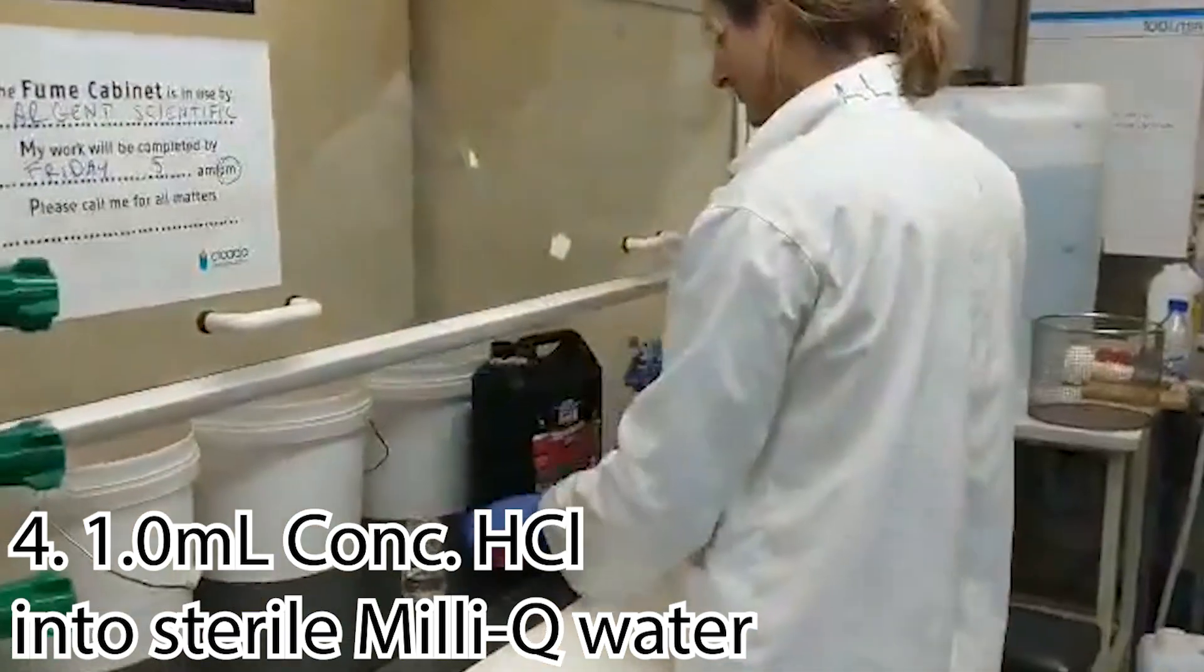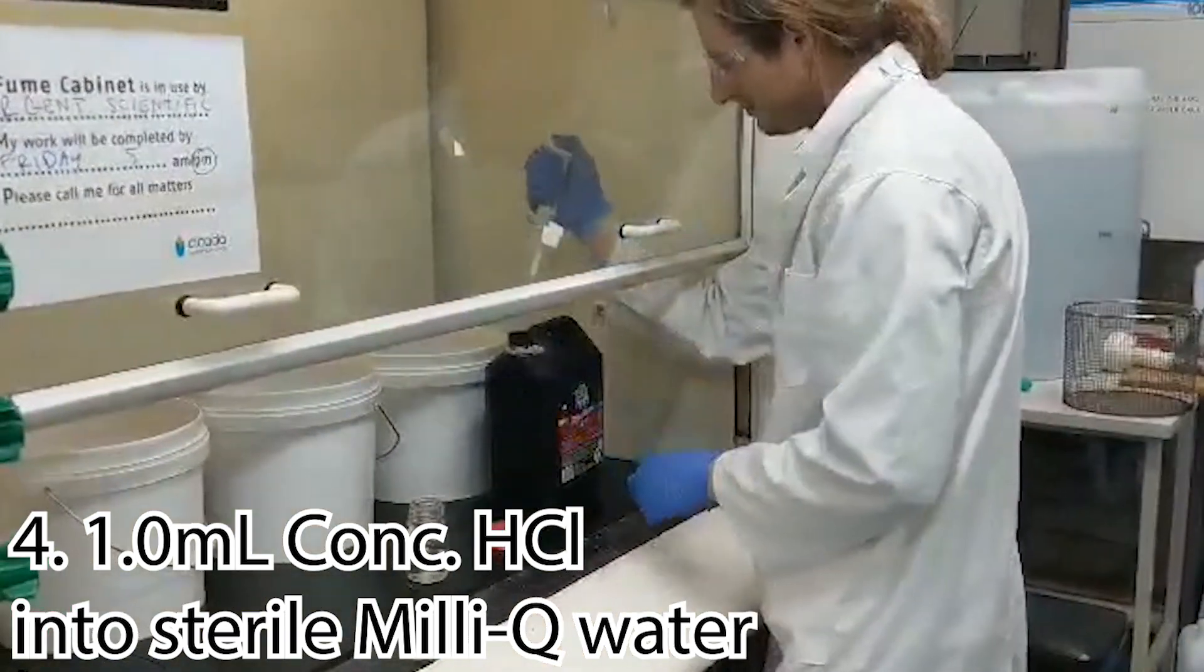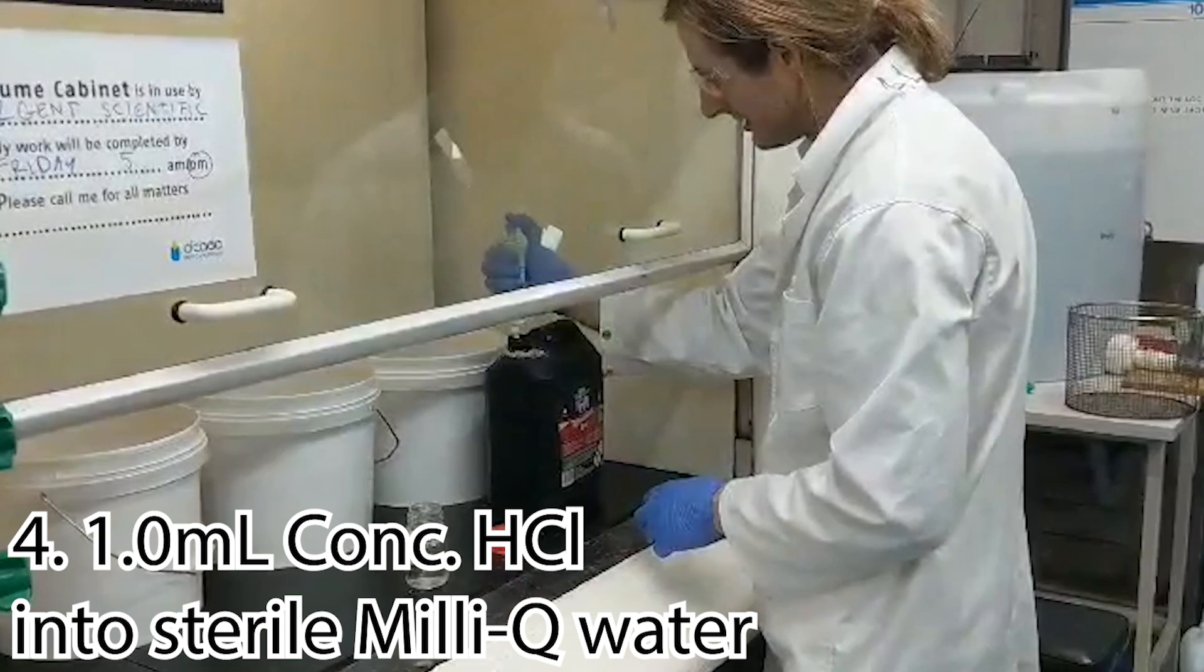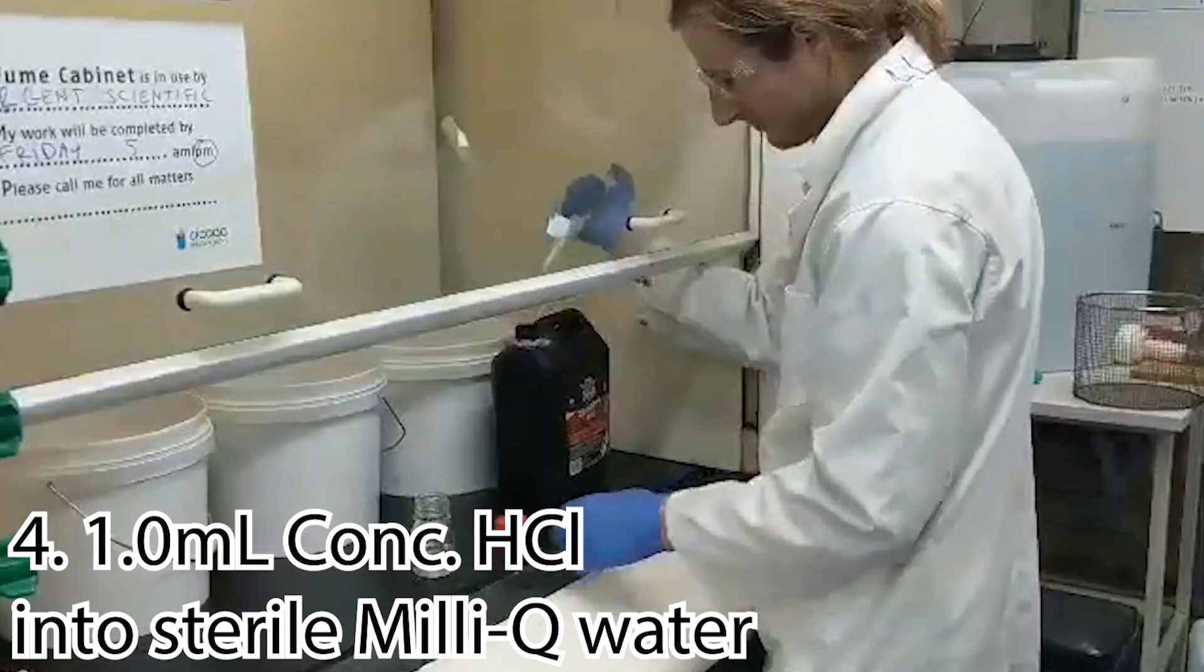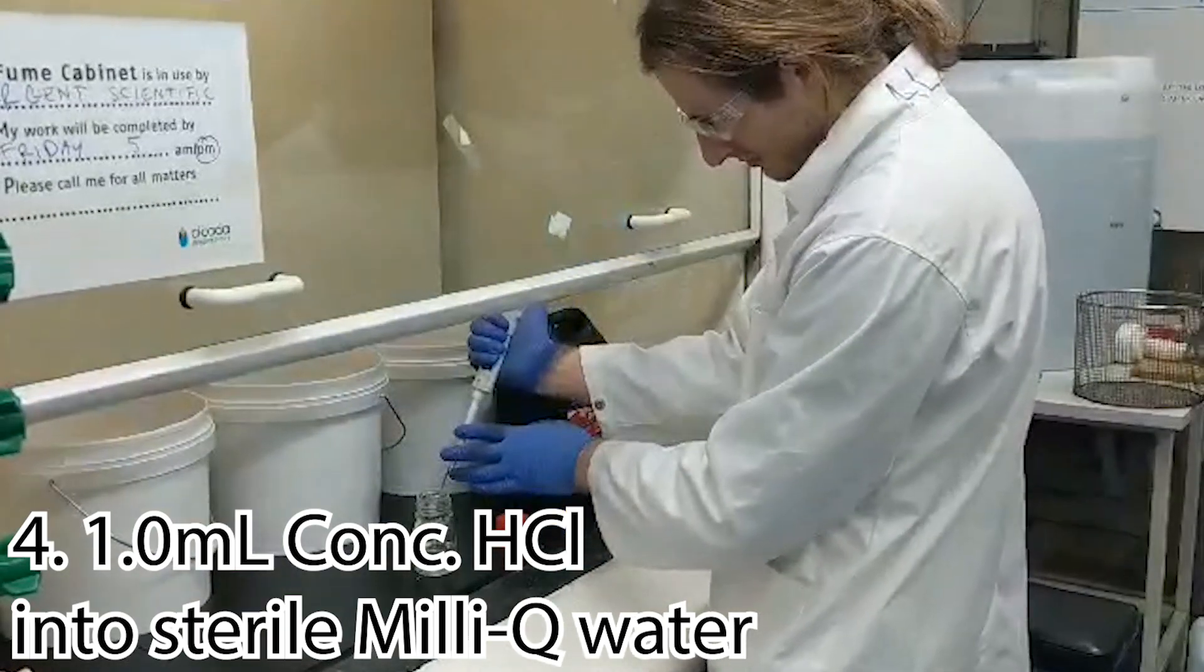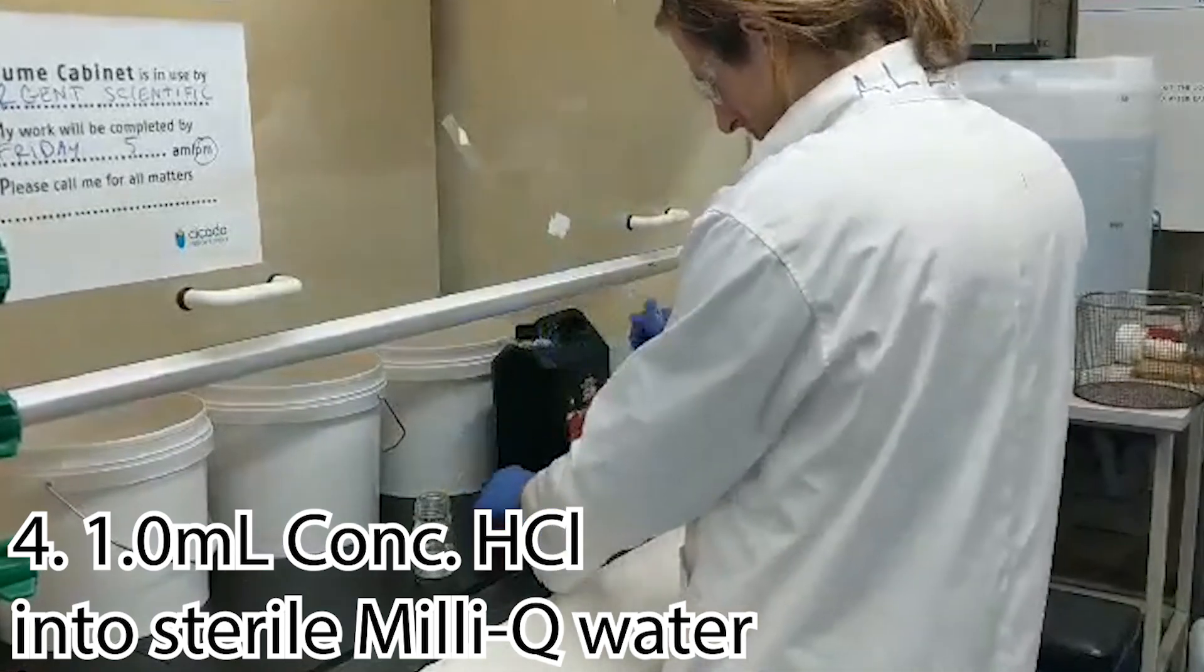Okay, now we're going to dilute our concentrated hydrochloric acid by adding about a mil to a small beaker of sterile MilliQ water. If it wasn't sterile before, it is now. Please remember to be super careful around concentrated acids. They will leave you with dreadful scarring. I won't repeat the nursery rhyme, but don't add water to concentrated acid. Do it the other way around!